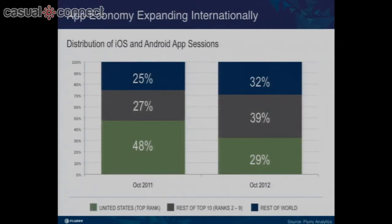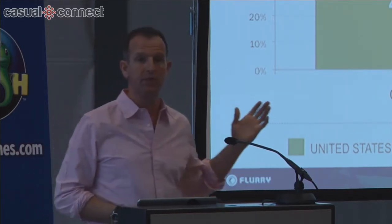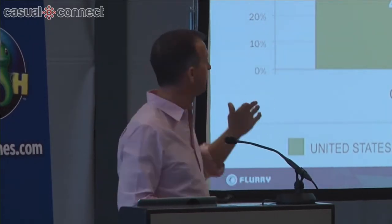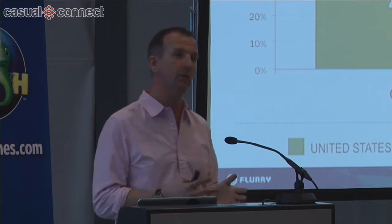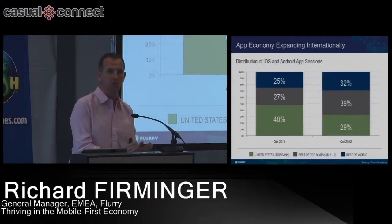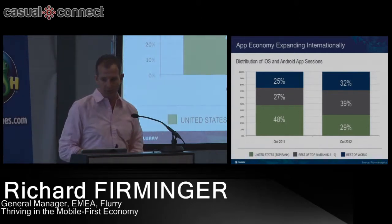This looks at the US market — the largest by rank in terms of users — and the iOS market. In October 2011, of all app sessions we track across over 290,000 applications, we saw about half of app sessions in the US market, 27% in the next eight countries, and 25% elsewhere. Look what's shifted in a year. Now 71% of the app sessions we see are outside the US. The predictable trend is that the US, as a percent of app sessions, gets smaller and smaller as this market matures. Hopefully that helps you think about which market you should focus on.